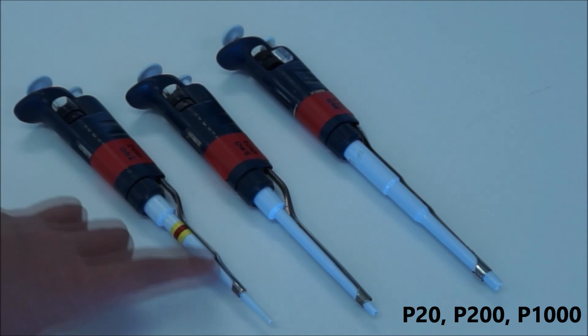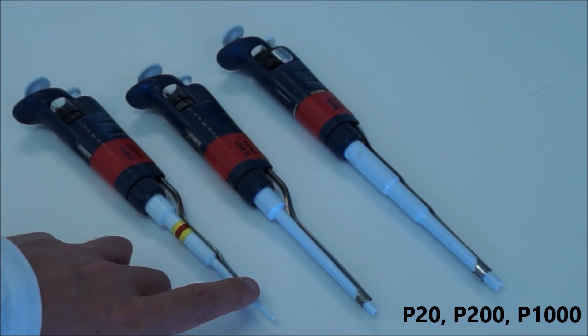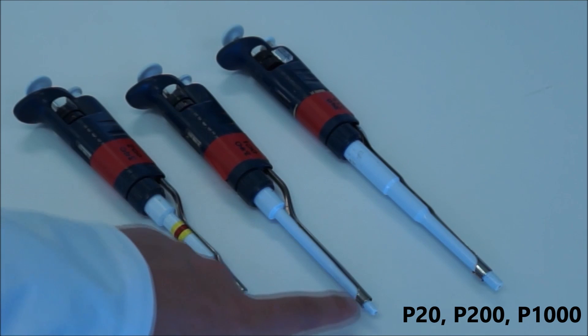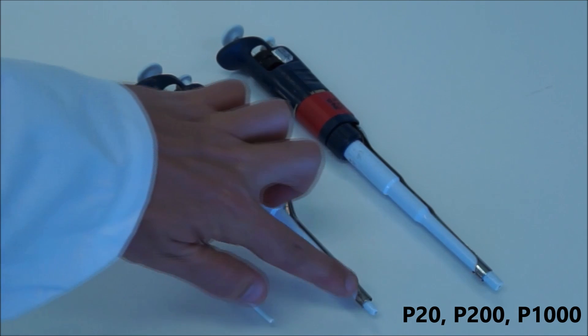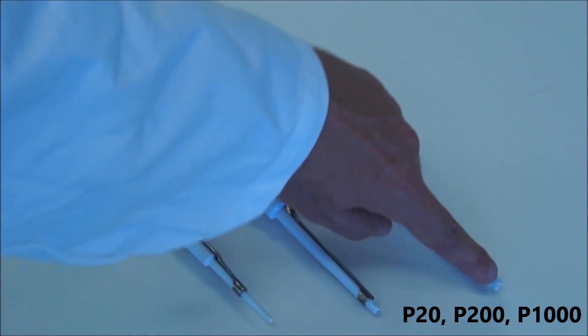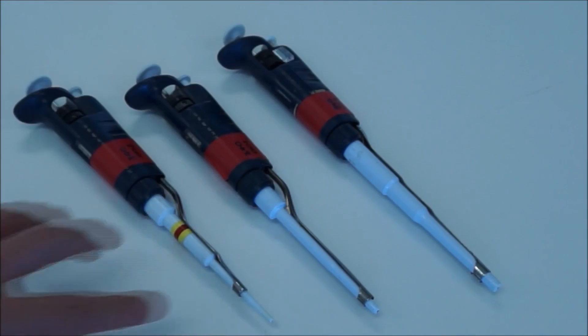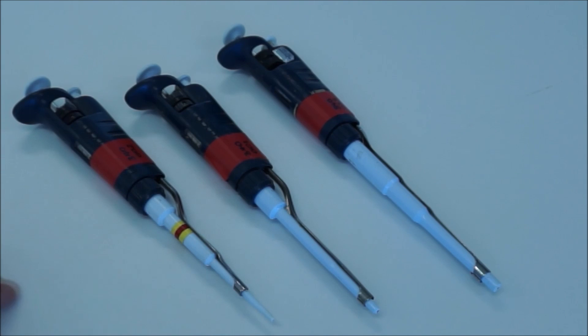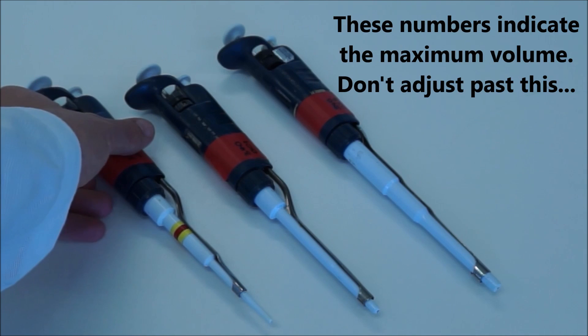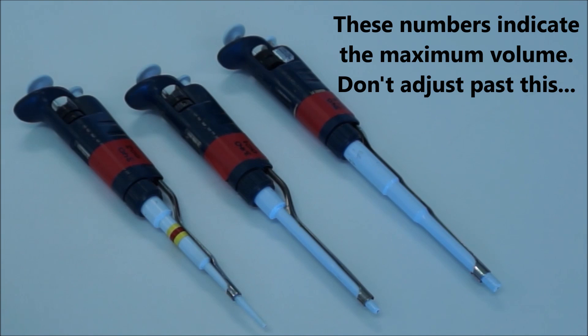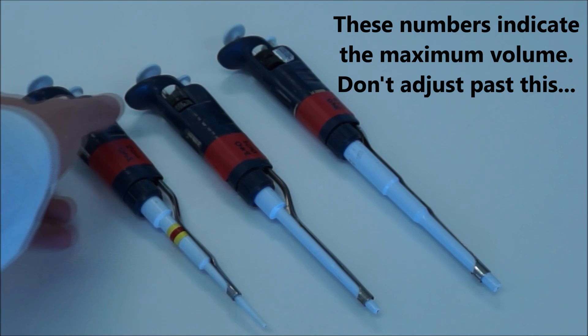There are three that you might see in the lab. The first is a P20, it's got a very long pointy end. The next is a P200 and it's got a snub nose. And the next is a P1000 which is quite wide. We'll be using mostly the P20.